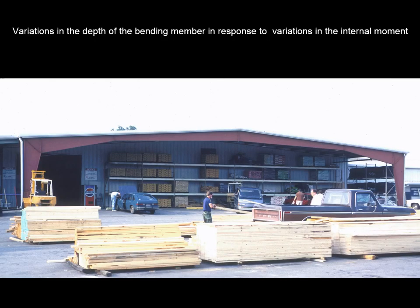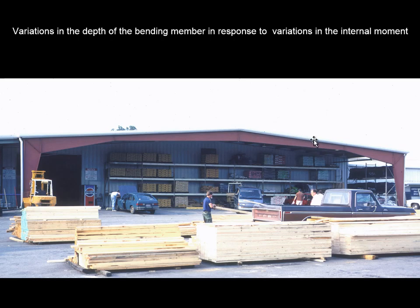Here's another example where depth variations respond to variations in internal moment. A cantilever coming off a vertical element creates the most intense moment at the joint — compression on the bottom, tension on the top. At some point we transition into a simple span zone, where the depth is greatest at the center. On the other end, another cantilever creates a very intense moment at that joint, which is why the structure is thickest at that point.